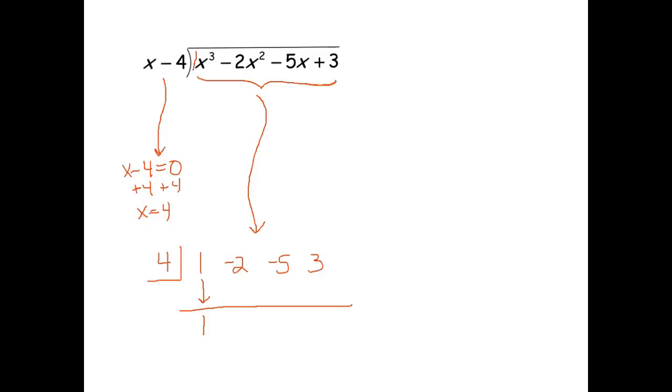That's 1, so I'm always going to just bring that down. The next step is to multiply that number with this 4 over here. So 1 times 4 is 4. I'm going to write that answer right in that space. So again, we multiplied the 1 and the 4 to get 4. And now we're going to add these two numbers, so negative 2 and 4 add together to get 2.